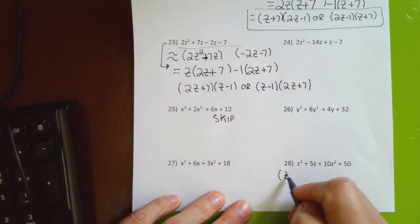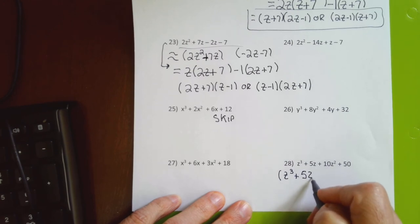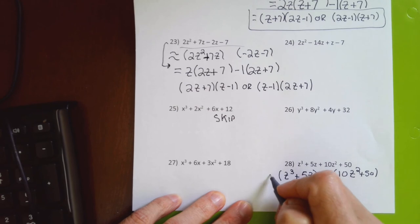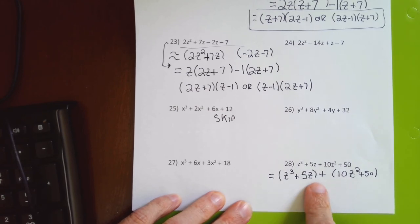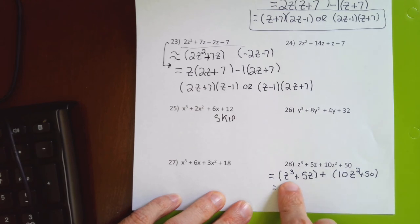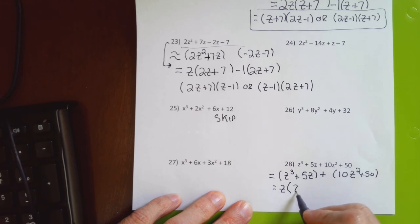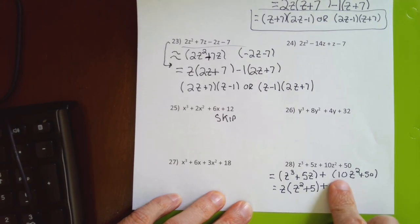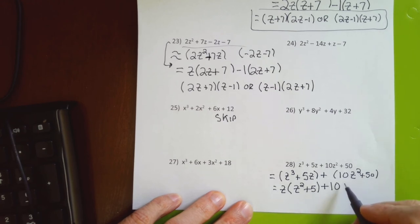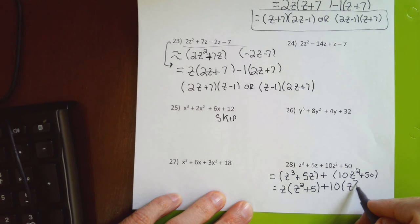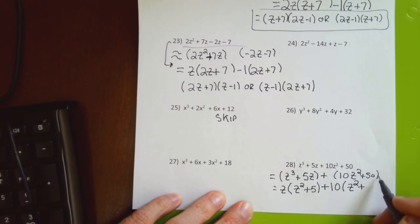For problem 28, I put z³ + 5z in the first parenthesis and 10z² + 50 in the second — this really equals the line above it. First parenthesis: both terms have z, so I factor out z. The first term had three z's, I took one away and I'm left with z², and after the plus sign I took the z away and left 5.